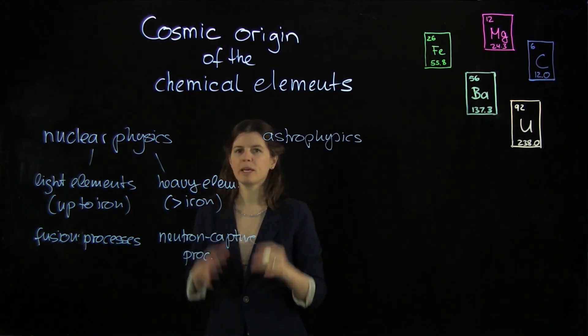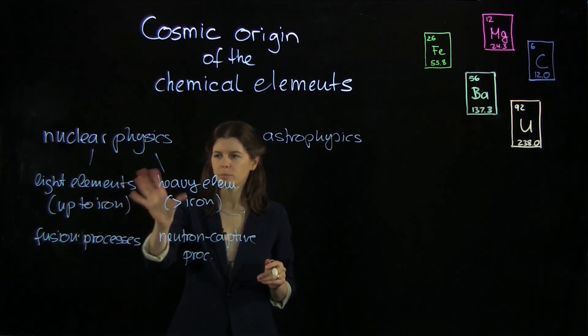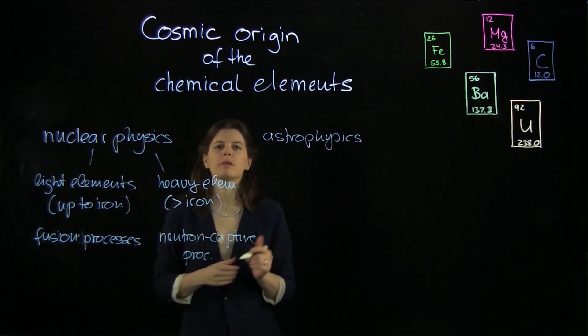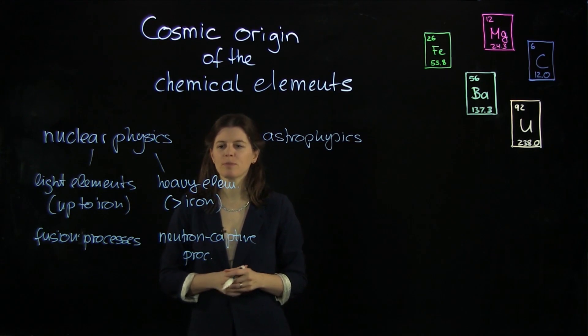And so they are made in what's called neutron capture processes. And that's a really neat way of making big, heavy nuclei. And so these two parts here together really explain how most of the elements in the periodic table are made.